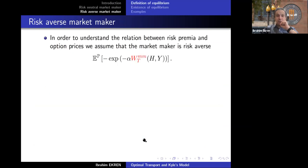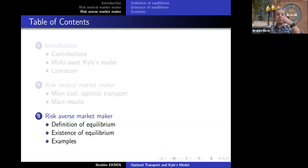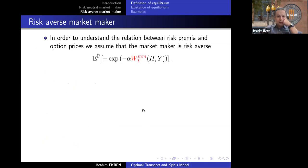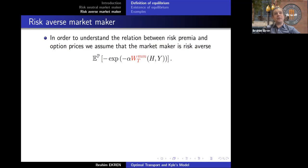Let's pass to the risk-averse market maker case. In the risk-neutral model, the pricing process P_t is a martingale in the market maker's filtration — market makers are quoting fair prices and their expected profit is zero. That is why it is called risk-neutral market maker. You can write it as a control problem from the perspective of a representative market maker and show the representative market maker has zero expected profit.